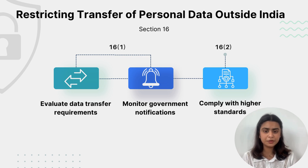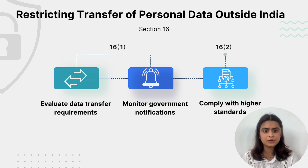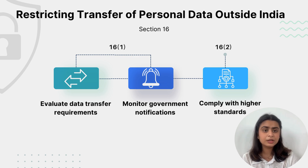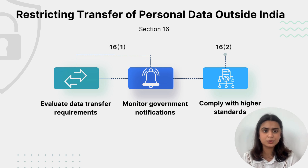Second, monitor government notifications. Here we need to establish a systematic approach to stay updated with the notifications issued by the central government regarding any countries or territories where data transfer is restricted. For example, companies like IBM and Wipro set up a compliance team that regularly reviews updates from the Indian government to ensure they do not transfer data to newly restricted countries, avoiding any potential regulatory issues.